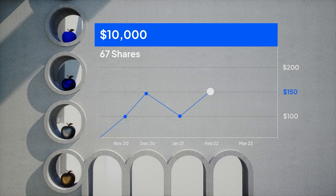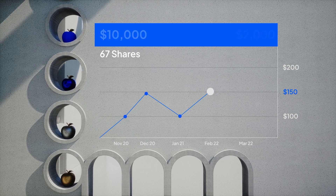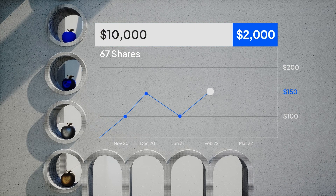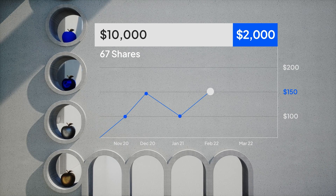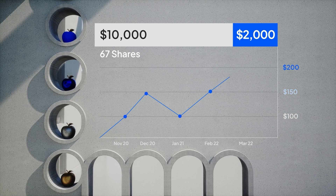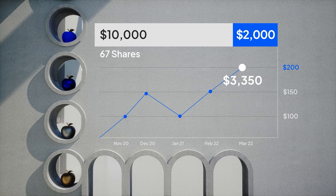With CFDs, for the same $10,000 Apple notional exposure, he would also buy 67 shares at $150, but instead of putting down $10,000 he would place a margin of $2,000 to initiate the position. As a retail account, he's required to place 20% of the total face value down. If Apple shares go up by $50 to $200, in both cases he makes $3,350 — 67 times $50 — but his initial outlay was different.